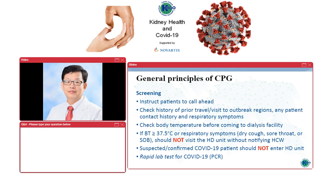Screening includes instructing patients to call ahead and check history of prior visits to outbreak regions, patient contact history, and newly developed respiratory symptoms. Screening also includes checking body temperature before coming to the dialysis facility. If body temperature is over 37.5 degrees Celsius or the patient develops respiratory symptoms such as dry cough, sore throat, or shortness of breath, the patient should not visit the hemodialysis unit without notifying the healthcare worker. Suspected or confirmed COVID-19 cases should not enter the unit, and rapid PCR lab testing is highly recommended for suspected patients.